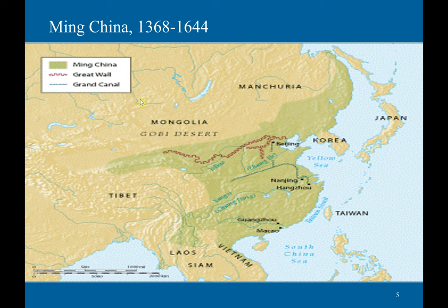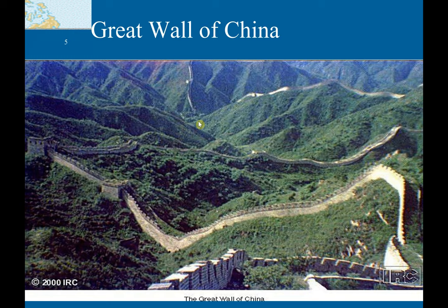This is a map of Ming China, with the Great Wall visible in the north. As we can see, it was obviously built in the north to protect against Mongol invasions. And that's a picture of the Great Wall of China — as we can see, it is a massive structure.